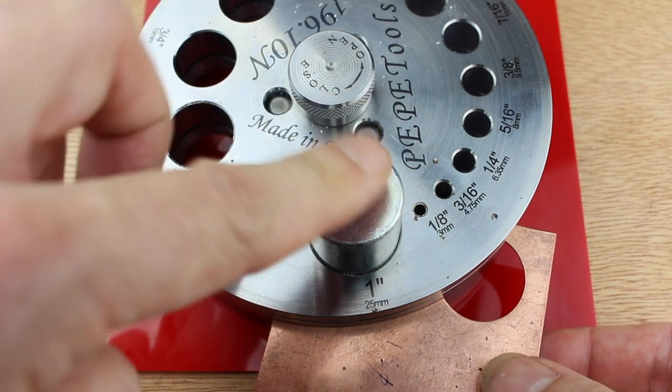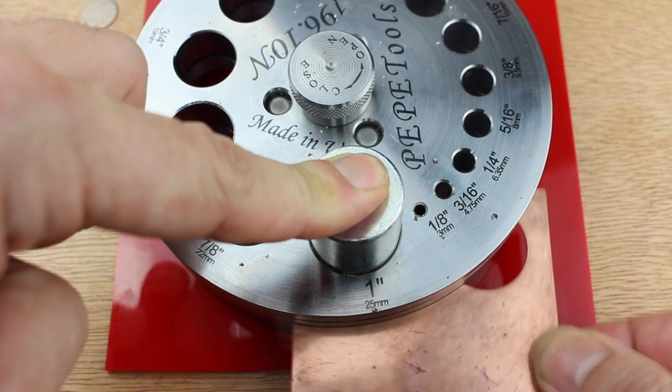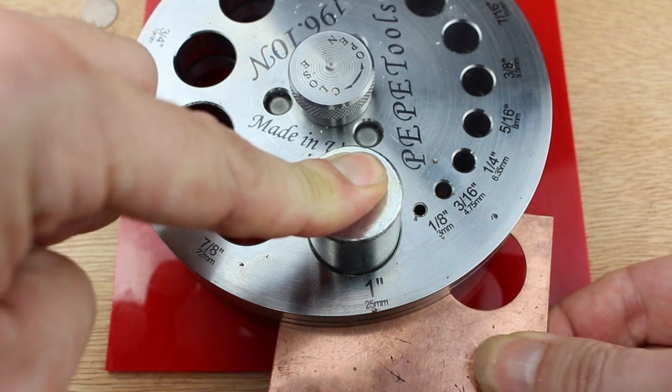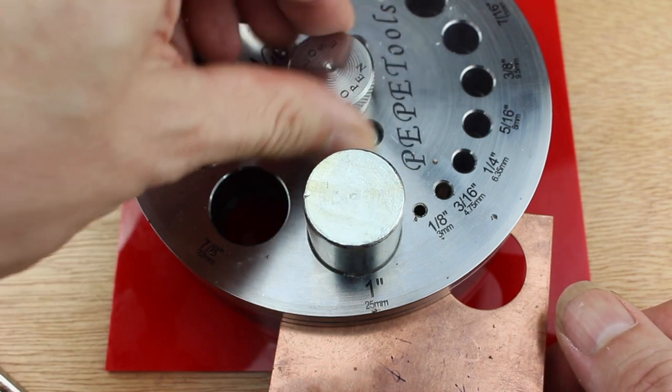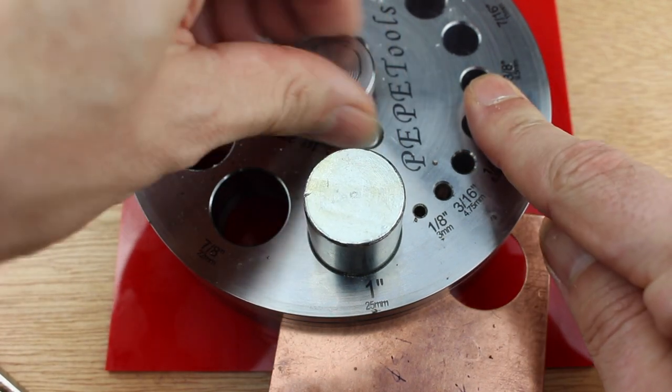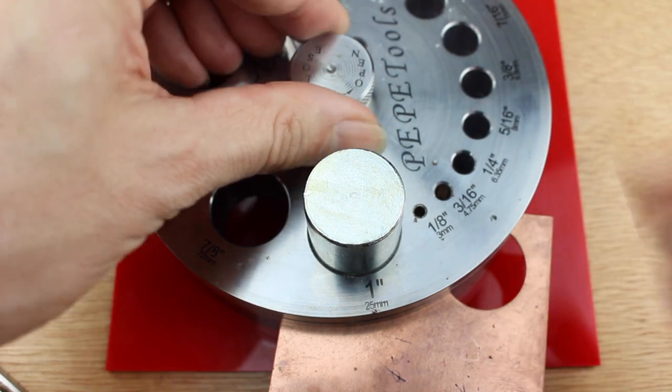Your metal should rotate but it shouldn't be able to rattle. Now tighten the thumb screw and lock everything down in place. It's important to note here that the positioning dies are just for alignment, so don't strike them or try to punch with them.